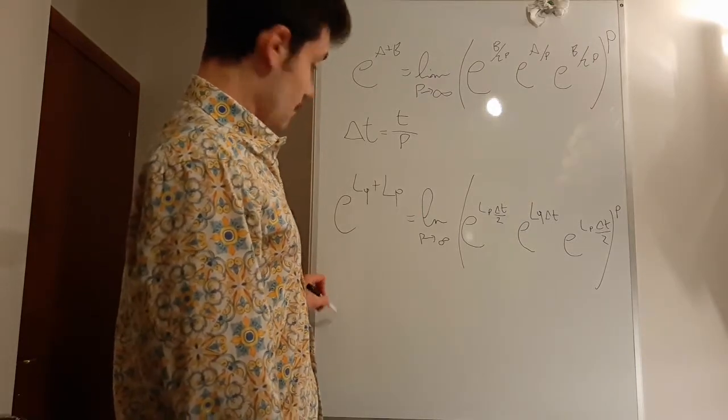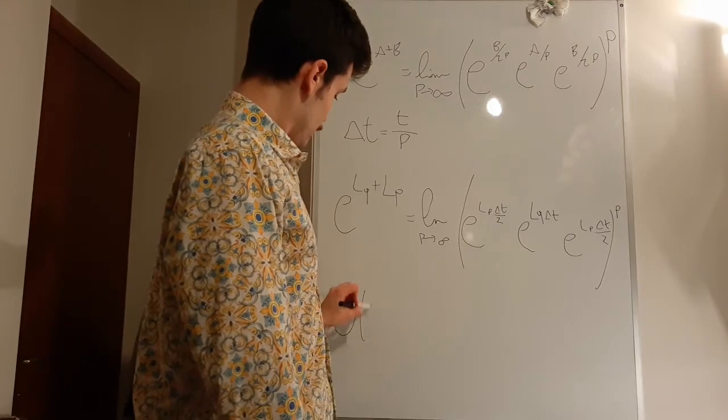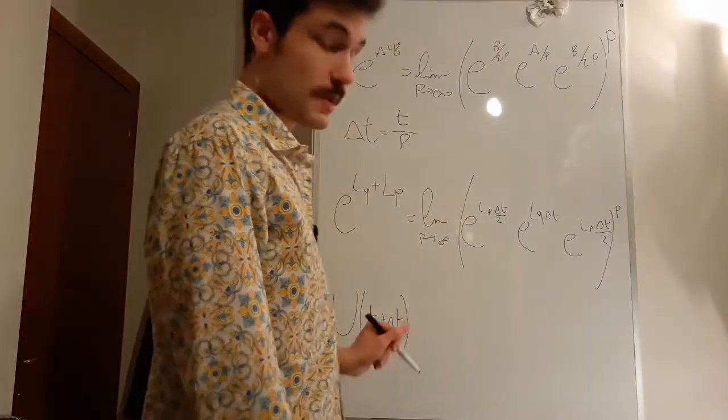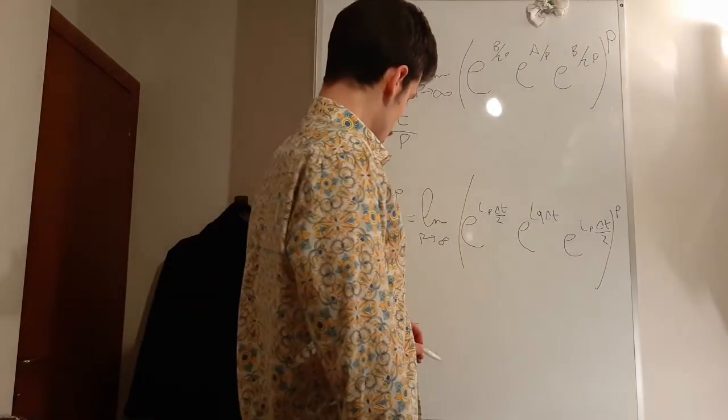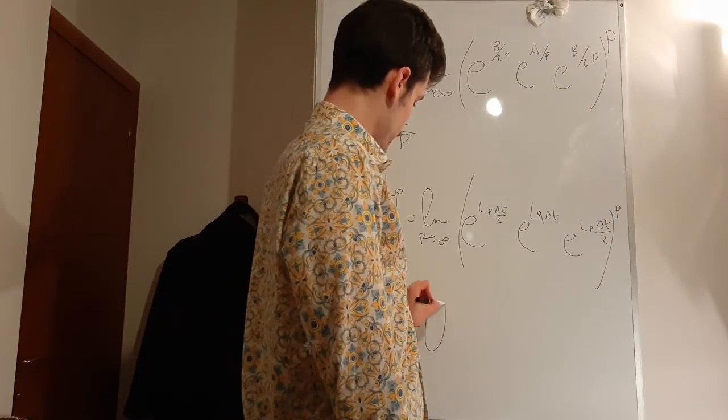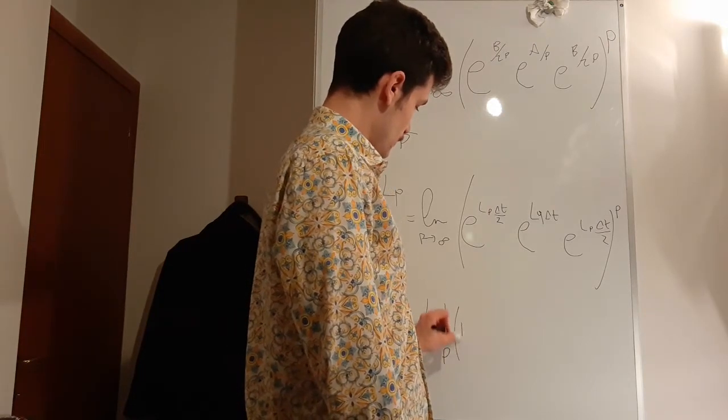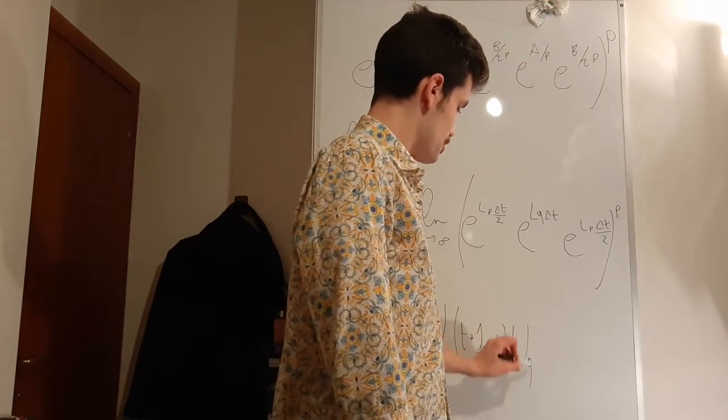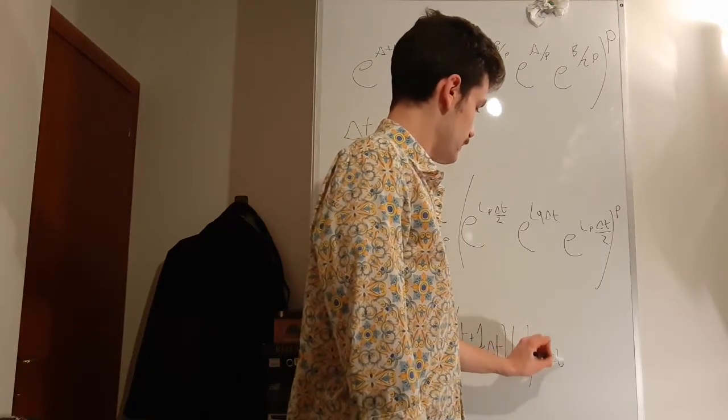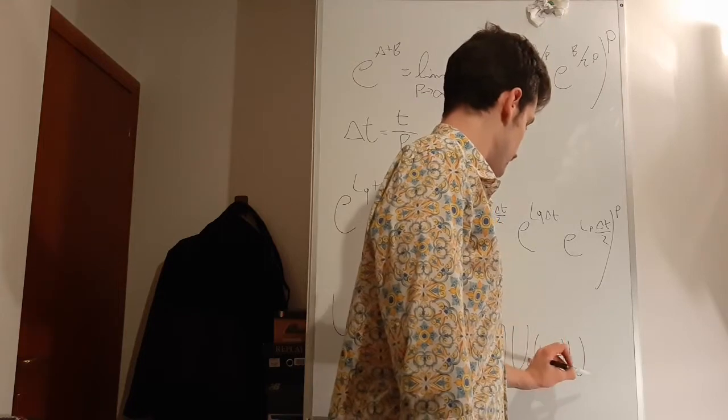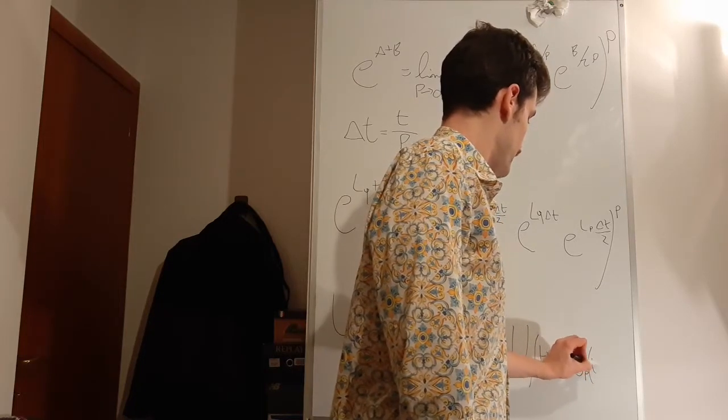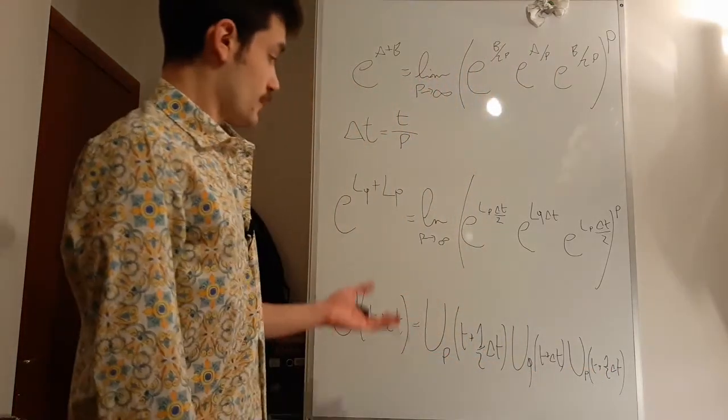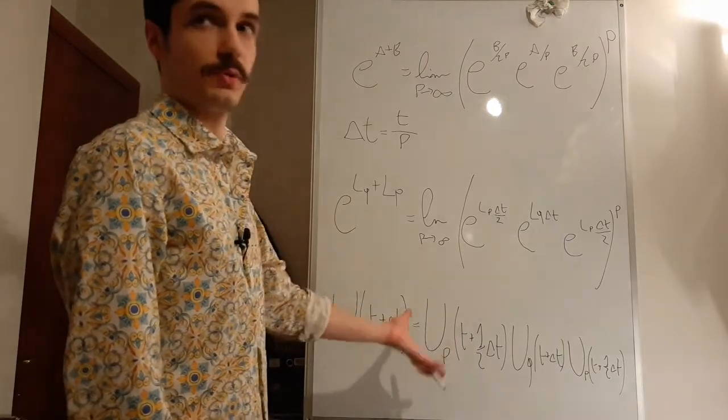We can say that the propagator U of t plus delta t is equal to a propagator of the momenta of time plus one half delta t, a propagator of the positions of time plus delta t, and a propagator of the momenta of time plus one half delta t. This is exactly what we had for the velocity Verlet.